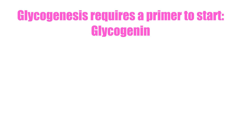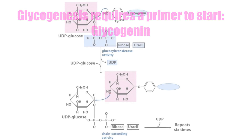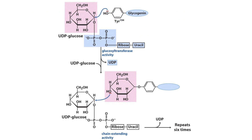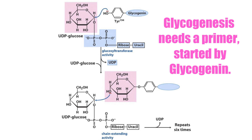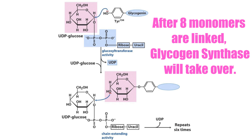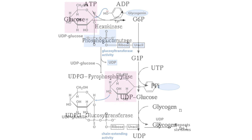UDPG is going to be the molecule that will add to this growing chain, but we first need to have a primer. The OH group of a tyrosine on a protein known as glycogenin is going to create this primer for us. After it links about eight molecules of glucose together, then glycogen synthase will take over. Glycogen synthase can't start from scratch — it needs glycogenin to create this eight-molecule alpha-1,4 linked strand of carbohydrates before glycogen synthase can take over.